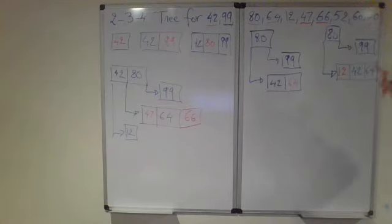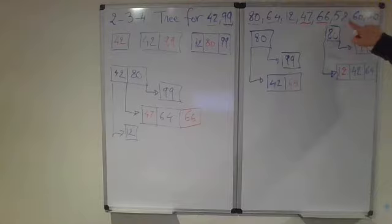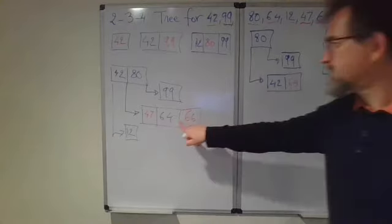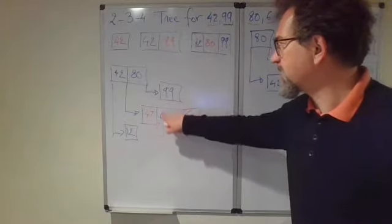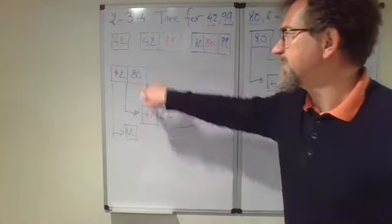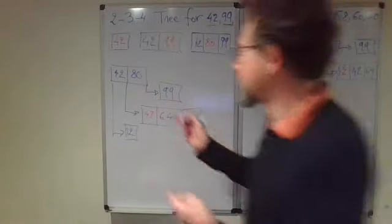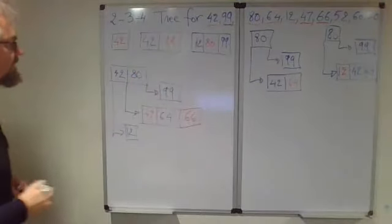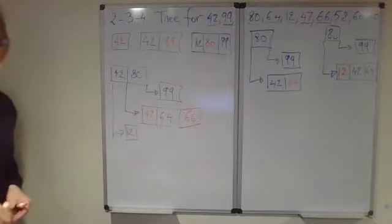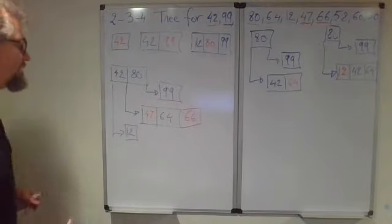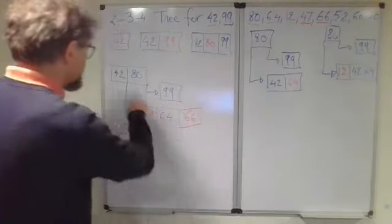Now 52 is the next number. 52 will also cause the split, will cause that this node gets splitted, and 64 moves up, can still be inserted in the root. So I can redraw this tree, but now the root node is now going to be a four-node, with in its middle the 64.